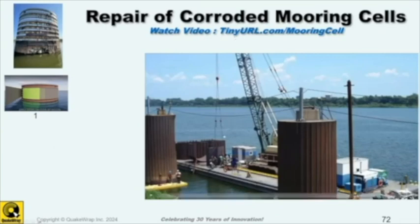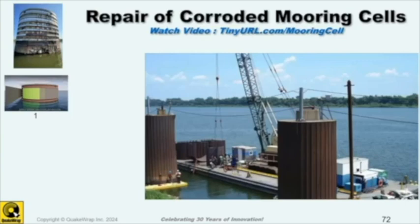The very last item is for repair of large marine structures like mooring cells. These typically corrode at the water level, and the ballast comes out causing instability. We are now making PileMedic laminates as wide as 3 meters — previously they were 1.2 meters wide. They come in 3 meters wide by 200 to 300 meters long rolls. You cut the length you need and repair the mooring cell the same way as we repaired the piles.